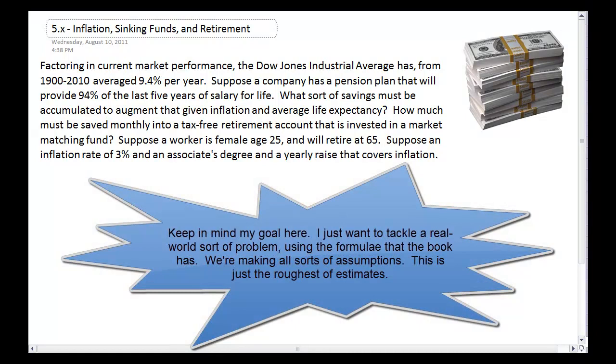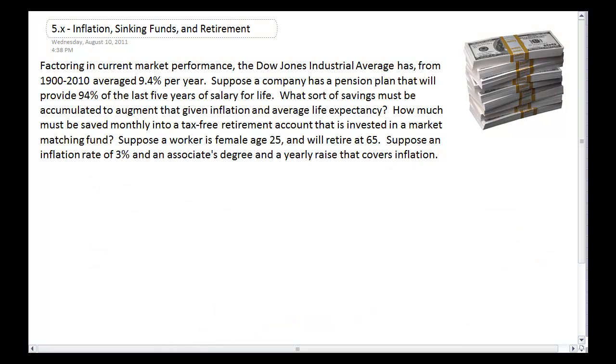I'm going to talk about inflation, sinking funds, and retirement. I'm going to make a pile of assumptions because this was the interesting example that I came up with, but I have to cut it down to size. Factoring in current market performance, the Dow Jones Industrial Average has from 1900 to 2010 averaged 9.4% per year. Suppose a company has a pension plan that at the end of 40 years of work will provide 94% of the average last five years of salary for the rest of that person's life. What sort of savings does the person have to accumulate to augment that, provided you calculate out inflation and what average life expectancy will be?